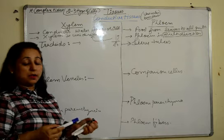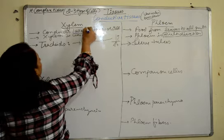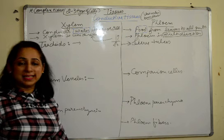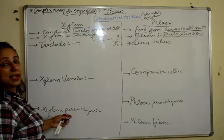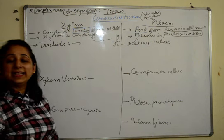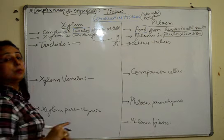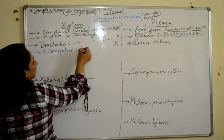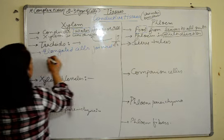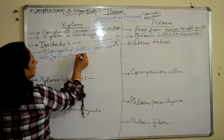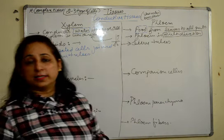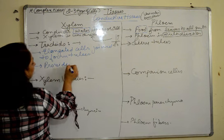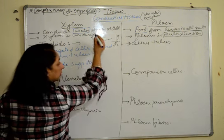Collectively, xylem conducts water and phloem conducts food, but each cell type plays a different role. Tracheids are elongated cells connected one after the other to form long tube-like structures, which are responsible for conduction of water and also provide support to the xylem tissue.